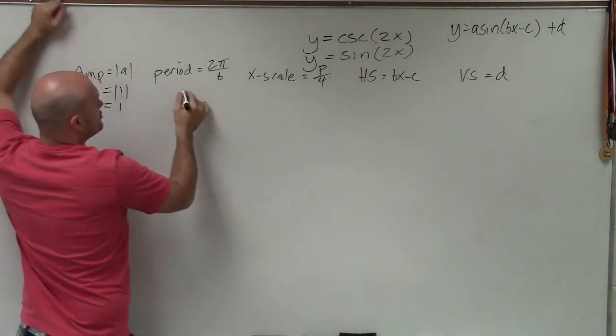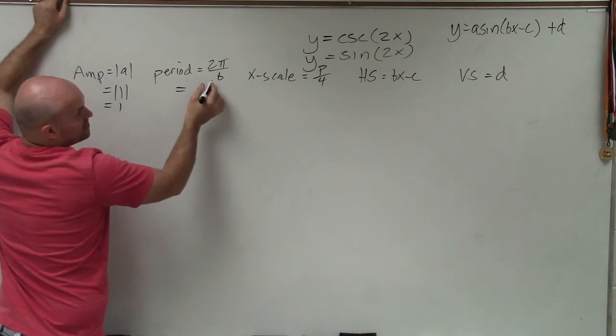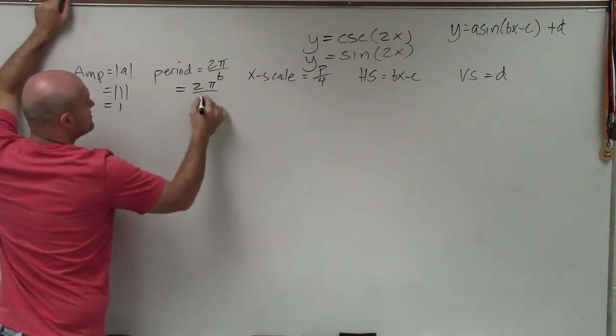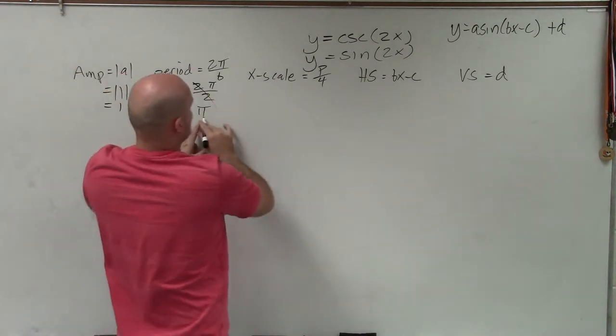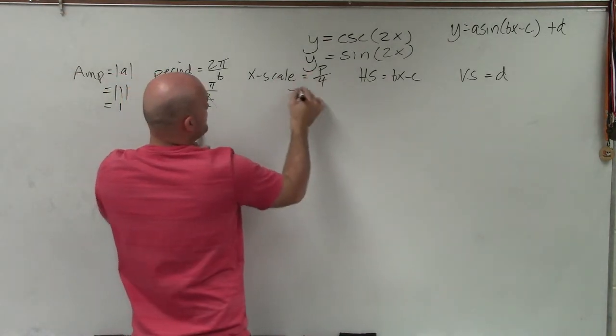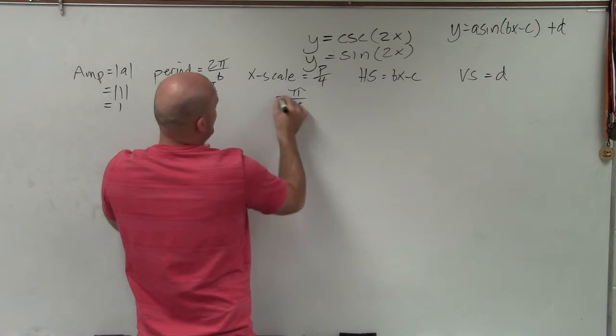My period, you can see I do have a 2b, or I have a b, which is 2. So it's 2 pi divided by 2, which equals pi. My x scale is going to be my period divided by 4. So that's going to be pi divided by 4.